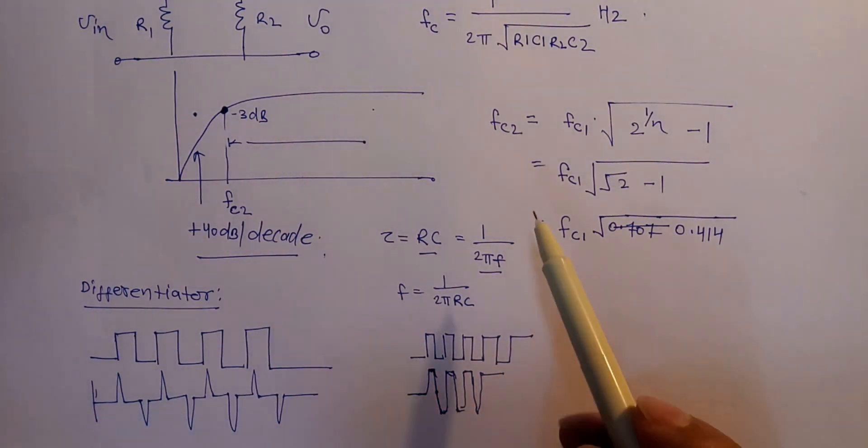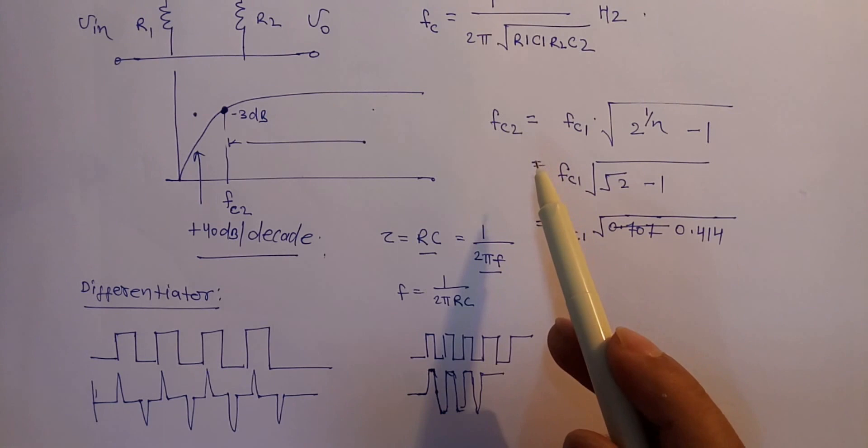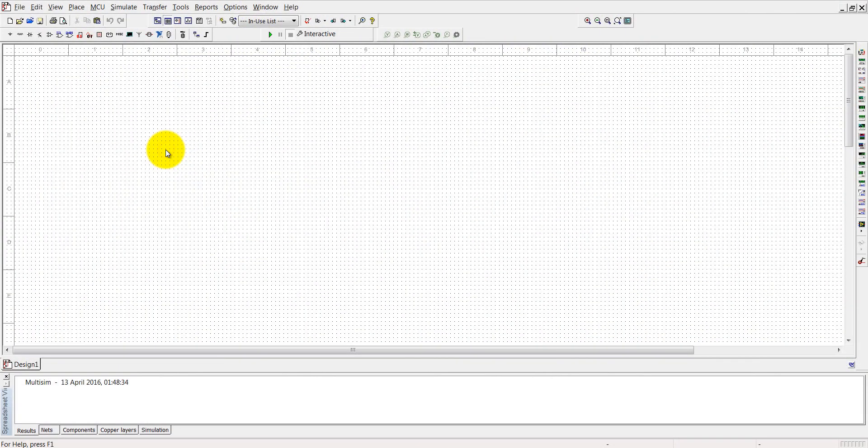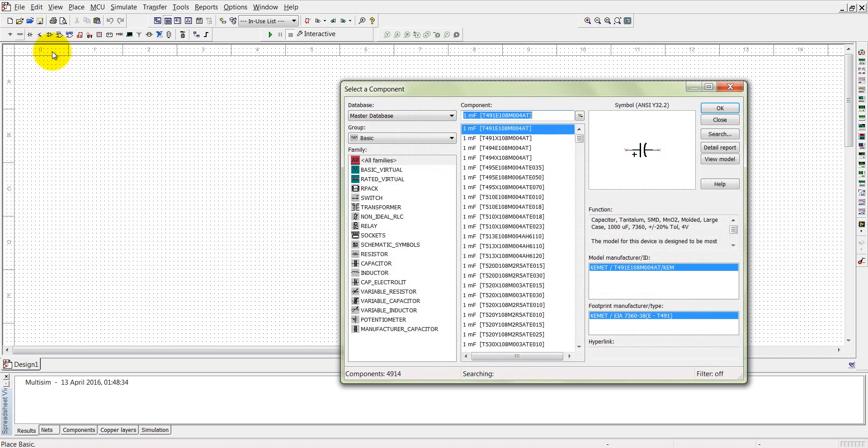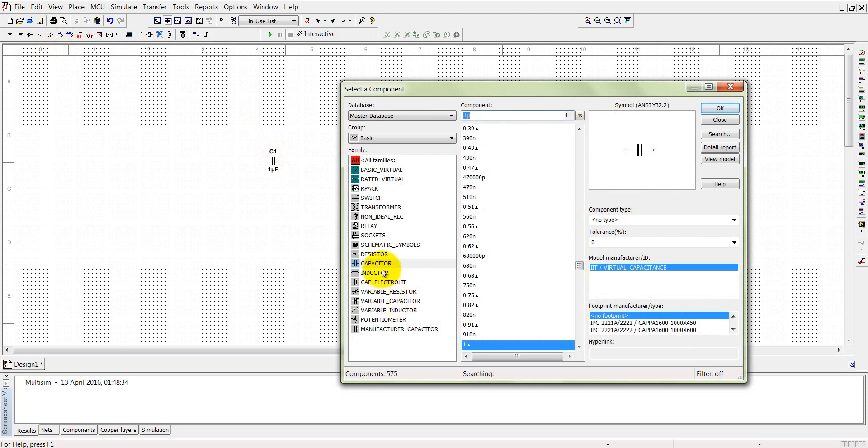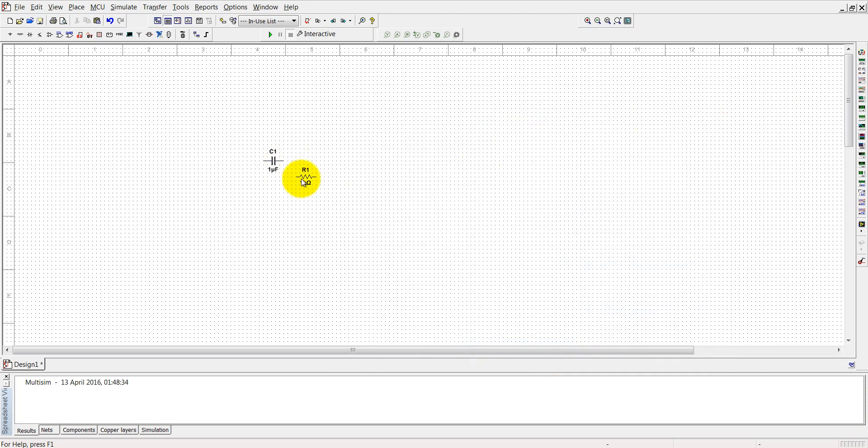So this is it for the high pass filter. Now let's see it in Multisim. First of all, we have to choose the capacitor and the resistance. So come here into the basic and choose your capacitor. Place it here, place it here, and then choose your resistance. Place a resistance at this point, just close it.